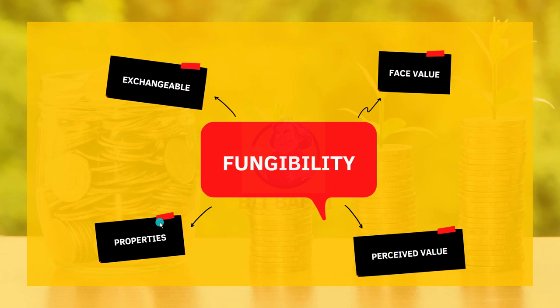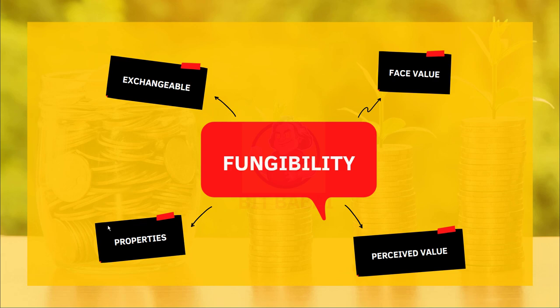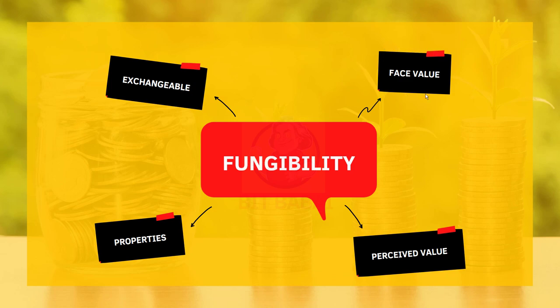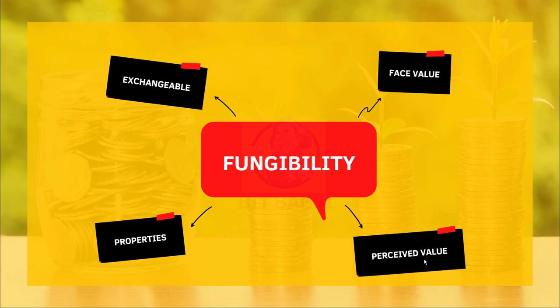Fungible items also have the same properties. When you look at a $100 note, you know it's a $100 note because they all share the same properties. Fungible items also have the same face value — all $100 notes are worth $100. And finally, the perceived value of these fungible items is usually the same as the face value. People don't value a $100 note more than $100.